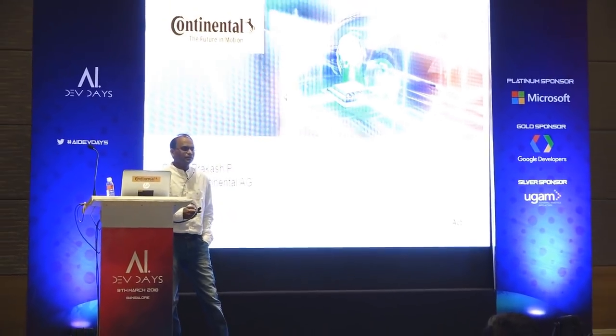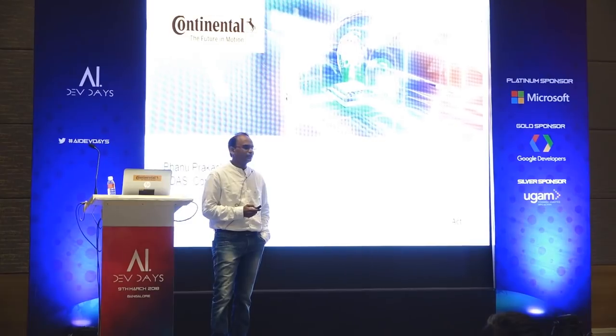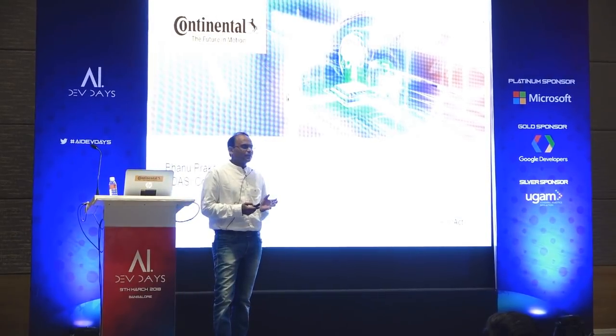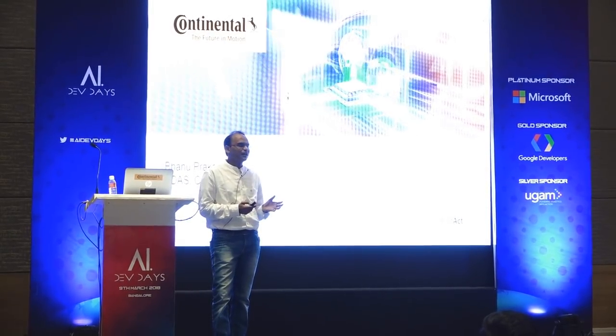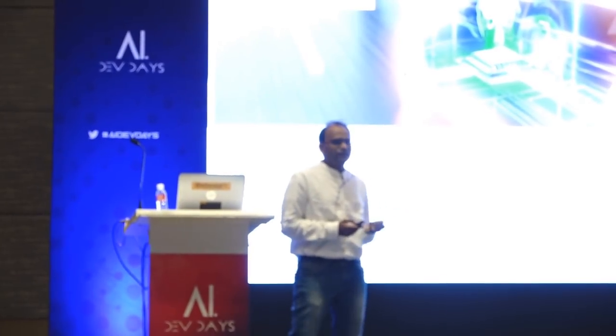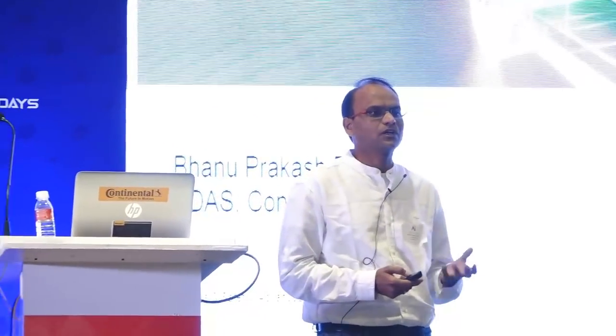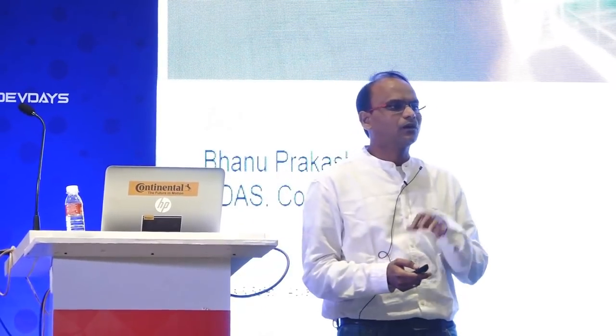Every year, about 1.25 million people die because of road accidents. Just to put this in perspective, it's like a fully loaded Boeing 747 collapsing every working day. This is the volume of accidents happening around the world in a year. The major research finding is that human error causes the majority of accidents. So autonomous driving is all about keeping the human out of the driving equation. At Continental, we have something called Vision Zero — zero fatalities on roads — and that is what we aim for.